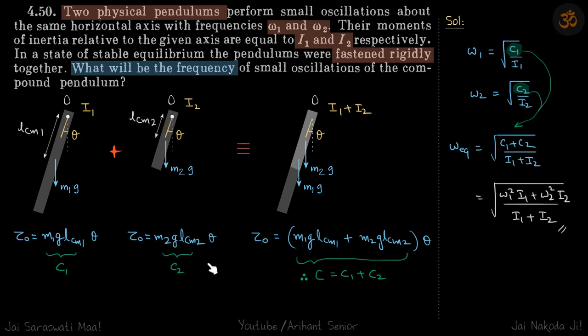So you can see c is equal to c1 plus c2. Now it's given omega-1 is root c1 by i1 and omega-2 is root c2 by i2. And for the combined system, I becomes i1 plus i2 and c becomes c1 plus c2.